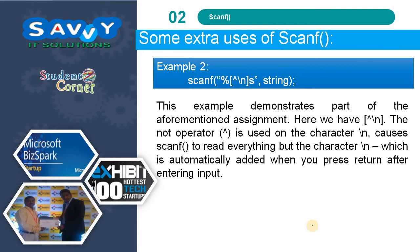Another example: scanf("%[^\n]s"). Here the caret (^) is the NOT operator applied to the newline character '\n', causing scanf to read everything except the newline character, which is automatically added when you press Enter after entering input.